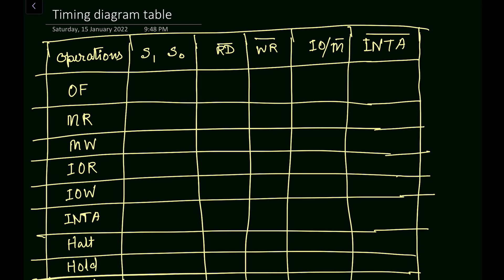Now let us see the various operations and their corresponding signal values. The first operation is opcode fetch — this is a read operation from memory and takes 4 clock cycles. The status signals S1 and S0 will both be one for opcode fetch — you must keep in mind that when S1 and S0 are both one, the microprocessor is performing the opcode fetch operation.